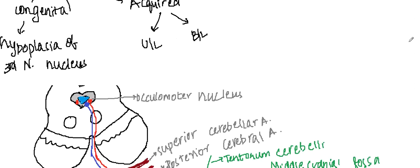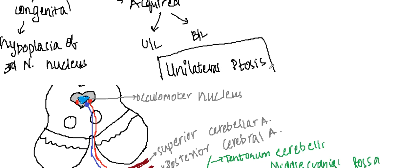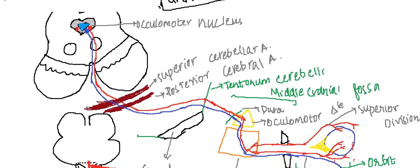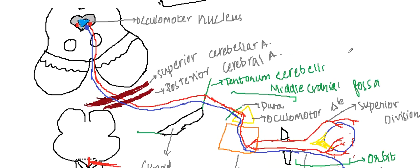Let us first learn the causes of unilateral ptosis through this diagram, and then we will learn the causes of bilateral ptosis. The main causes of unilateral ptosis include, first, a third nerve lesion. The third nerve enters into the cerebral peduncles and comes downward.